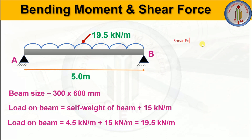Next, let's find the shear force. The shear force V equals wL divided by 2 for a simply supported beam. So V equals 19.5 multiplied by 5 divided by 2, giving 48.75 kilonewton as the shear force calculated manually.